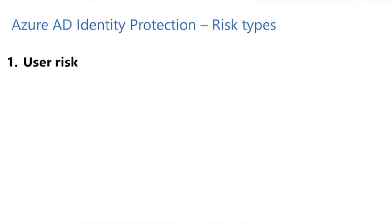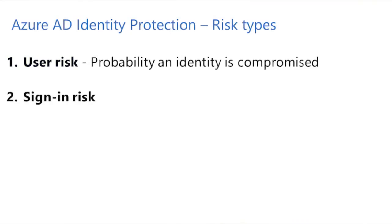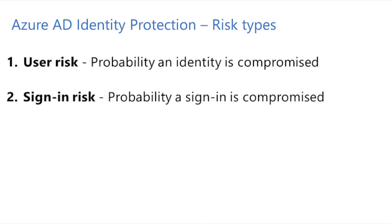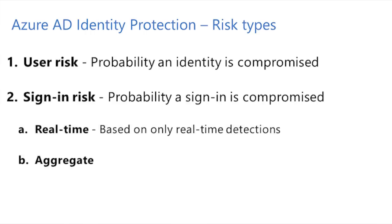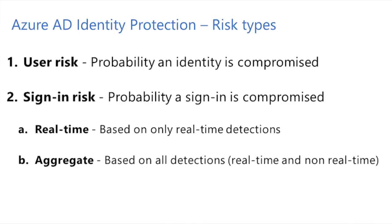These detections are used to calculate user risk and sign-in risk. User risk represents the probability an identity is compromised, whereas sign-in risk represents the probability a sign-in is compromised. The sign-in risk can be of real-time or aggregate type. Real-time sign-in risk is based exclusively on detections made during the sign-in, whereas aggregate sign-in risk is based on all detections, including the ones issued after the sign-in has taken place. These risks are shown as high, medium, or low in Identity Protection.